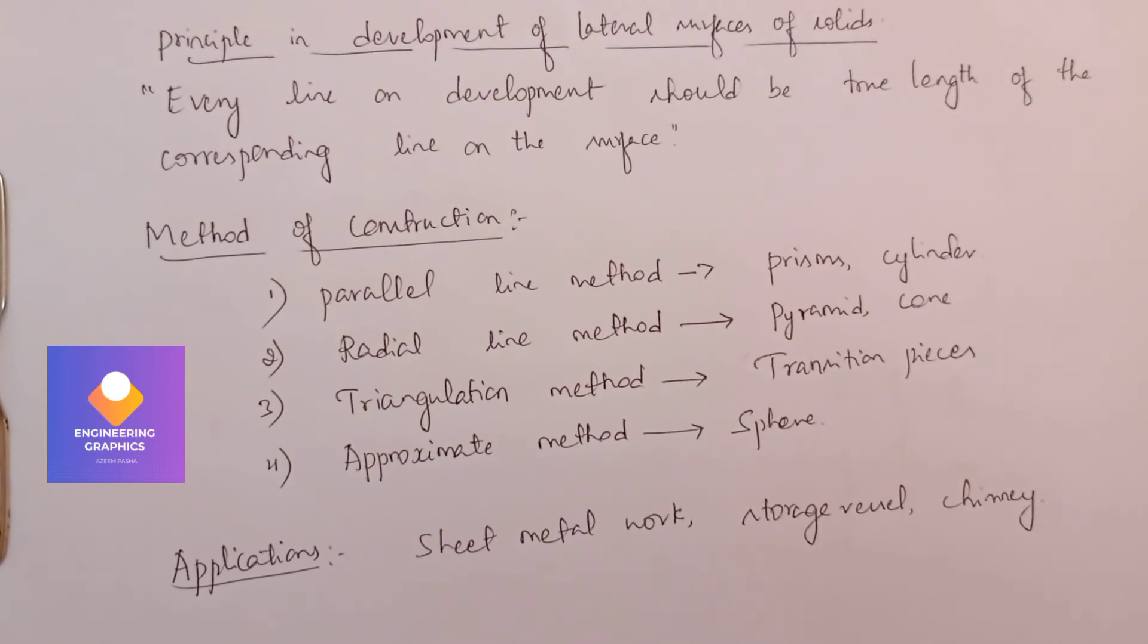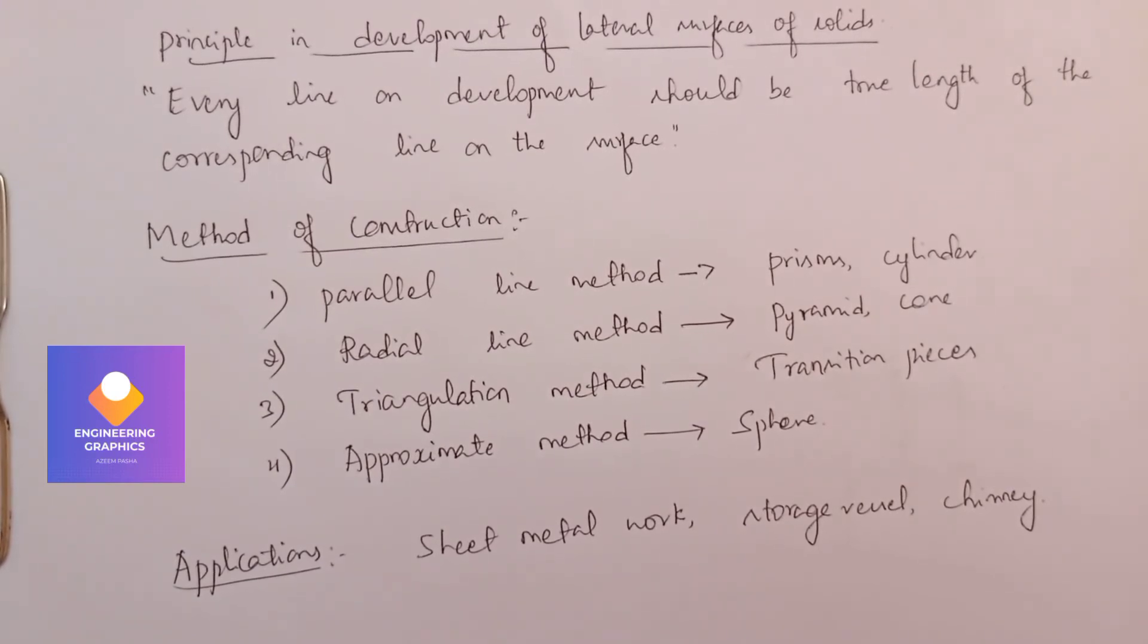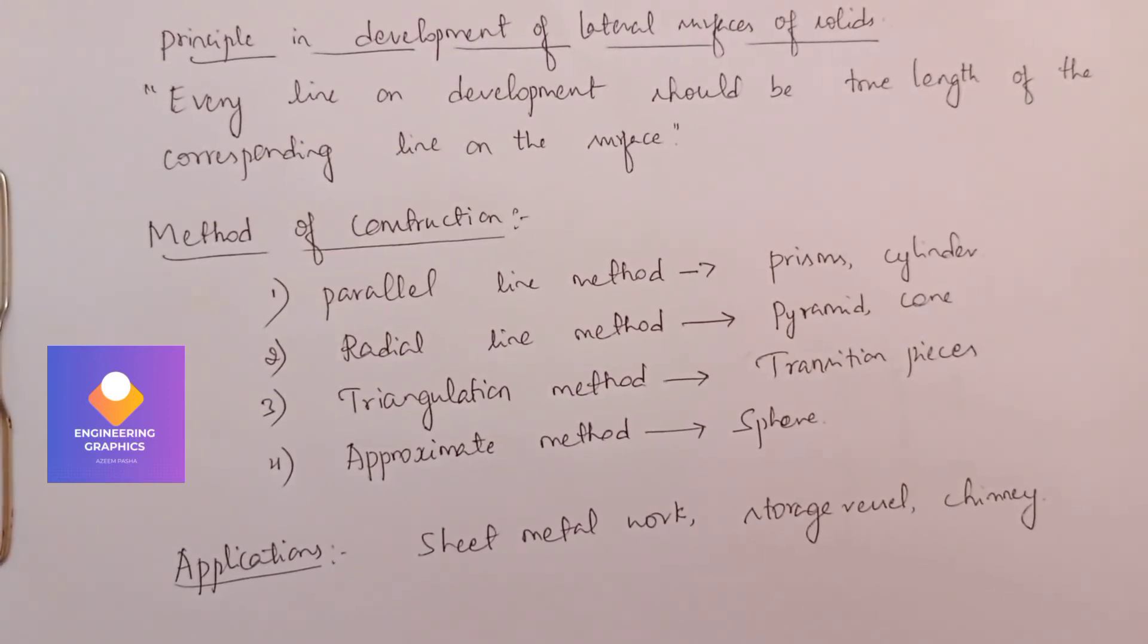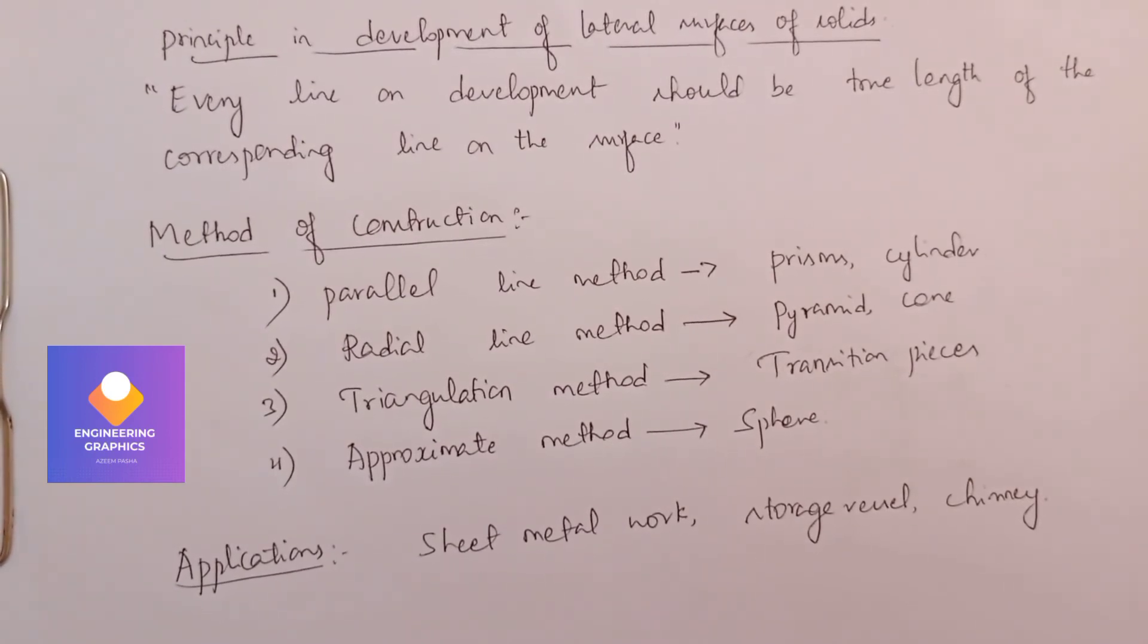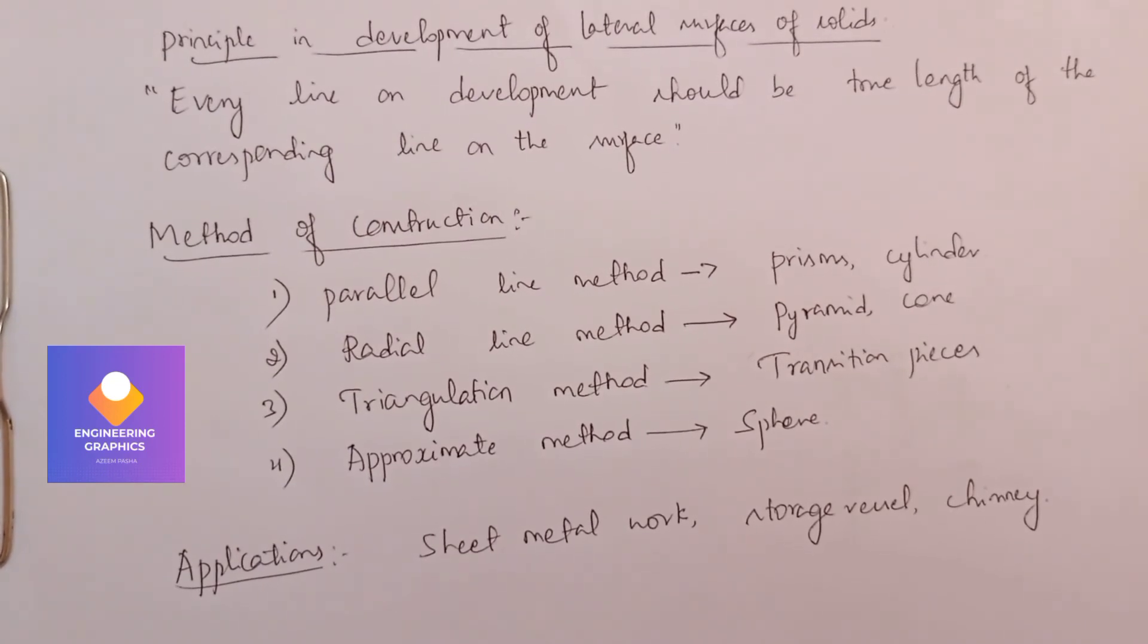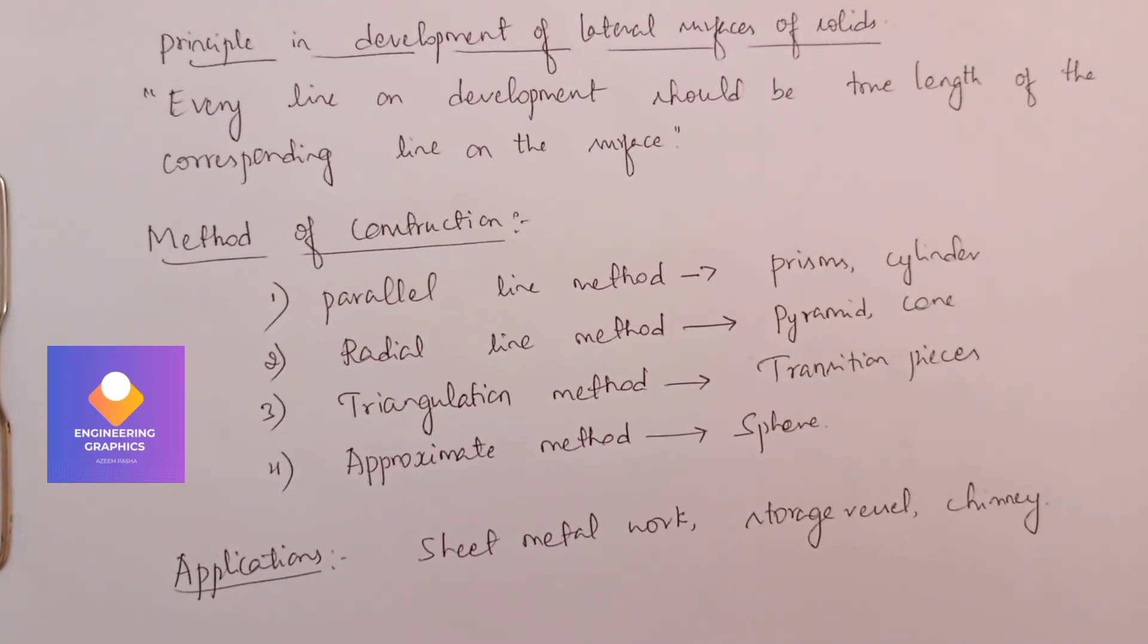Triangular prism, pyramid, all the transition pieces, and then sphere will be constructed using approximate method. The applications of these we find in sheet metal work, storage vessels, chimneys, etc.